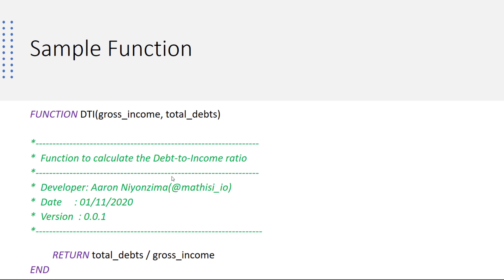Now let's see a sample of a function. A function starts with the keyword function, followed by the name of a function, and in parentheses we put only inward parameters. We don't specify outward parameters.